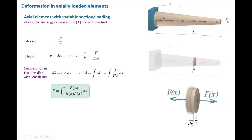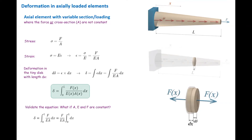Before solving a problem, let me validate this equation. This integral form is valid for every shape, so it should also be valid for a simple shape. I'm going to calculate the deformation when A, E, and F are constants. In that case, these constants can be taken out of the integral, and the equation simplifies to F divided by EA multiplied by the integral of dx from 0 to L. The integral of dx from 0 to L is simply L, giving us the FL/EA equation again. The integral form is a general deformation equation; the simplified FL/EA form is used when cross-section area and force are constant.